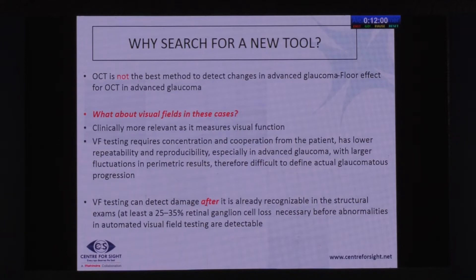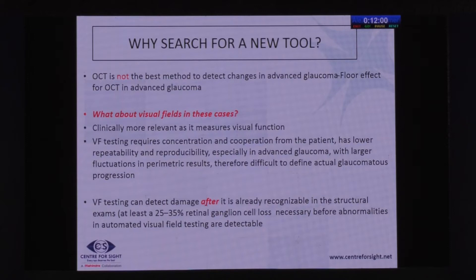Why not just do visual fields in these cases? Visual fields are definitely more clinically relevant, especially in advanced glaucoma, because they measure visual function. However, visual fields require immense concentration and cooperation from the patient. They have lower repeatability and reproducibility, especially in advanced glaucoma, with huge fluctuations in perimetric results — making it difficult to define actual glaucoma progression. It is also well known that visual fields can only detect damage after 25 to 30 percent of retinal ganglion cells have already been lost.